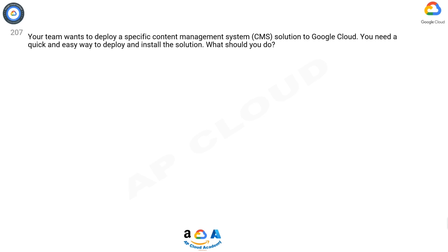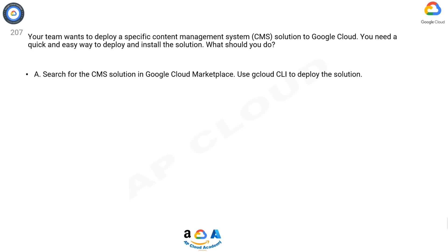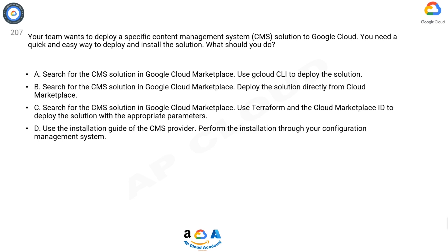Question 207: Your team wants to deploy a specific content management system (CMS) solution to Google Cloud. You need a quick and easy way to deploy and install the solution. What should you do? Option A: Search for the CMS solution in Google Cloud Marketplace, use Cloud CLI to deploy the solution. Option B: Search for the CMS solution in Google Cloud Marketplace, deploy the solution directly from Cloud Marketplace.